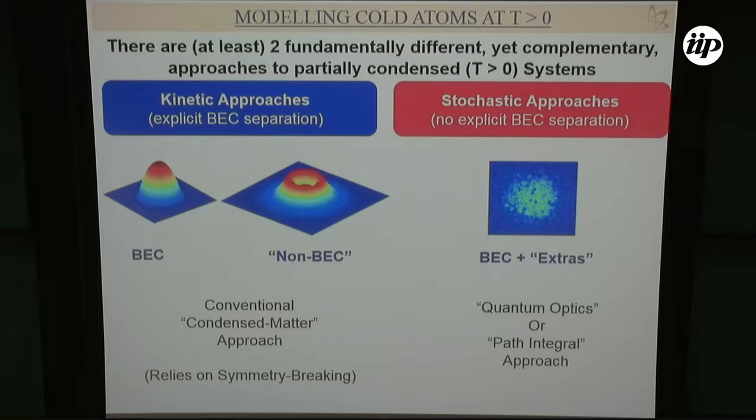This kinetic approach cannot describe the crossing through the phase transition — you already start a priori saying you have a condensate. It can describe a lot of the actual growth properties, but not the phase transition itself. The other approach is a stochastic approach.